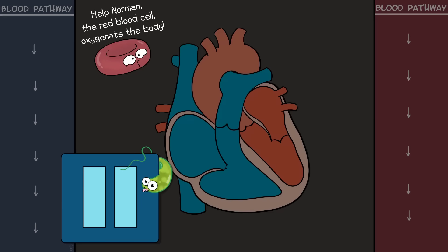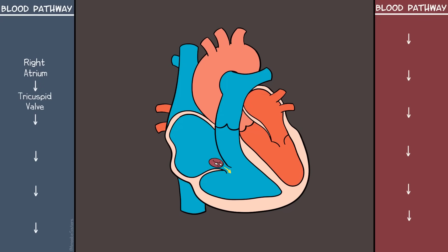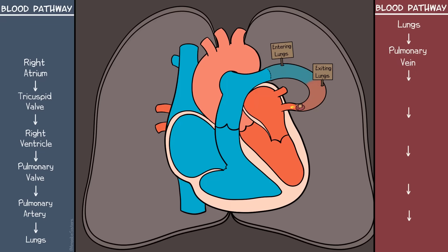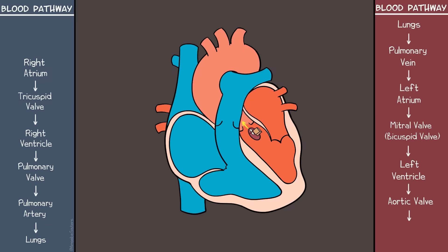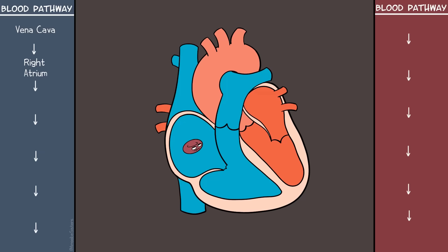To quiz yourself, can you pause and trace the pathway of blood starting with the right atrium? Here's the full sequence: right atrium → tricuspid valve → right ventricle → pulmonary valve → pulmonary artery → lungs → pulmonary vein → left atrium → mitral valve → left ventricle → aortic valve → aorta (takes it to the body) → and then it eventually returns through the vena cava back to the right atrium again.